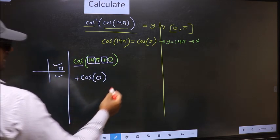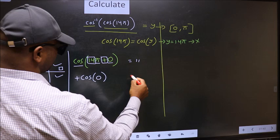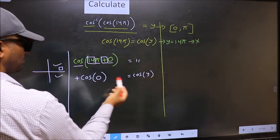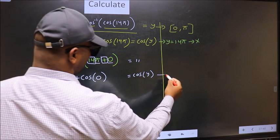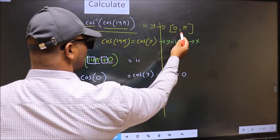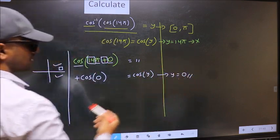Now on the other side, no change. Equal to cos y. Now comparing both sides, we get y to be 0. Does this lie in this interval? Yes. So this is our answer.